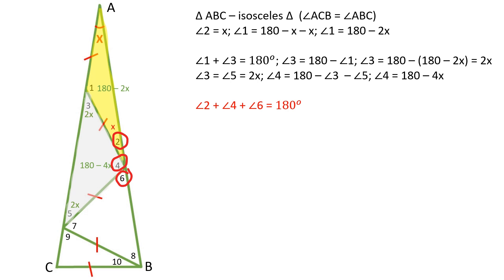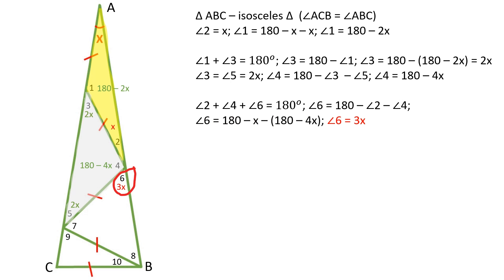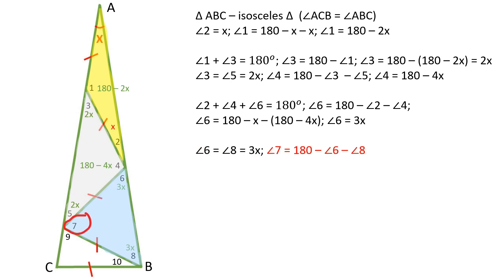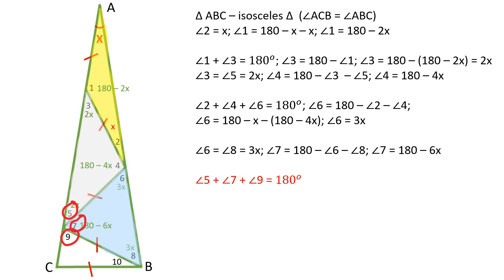The sum of angle 2, angle 4, and angle 6 gives us angle 6 is equal to 180 minus angle 2 and minus angle 4, which is 3X. Angle 8 is equal to 180 minus angle 6 and minus angle 8, which is 180 minus 6X.